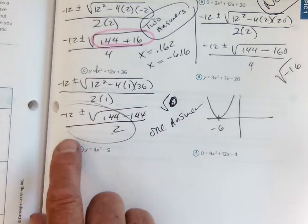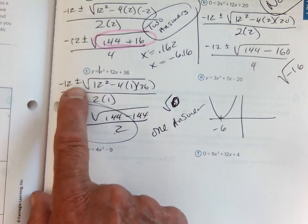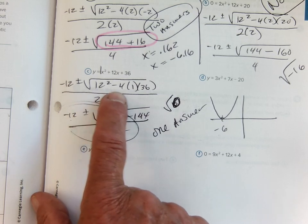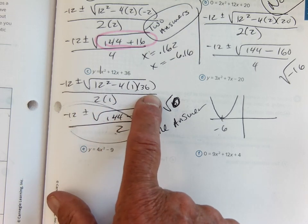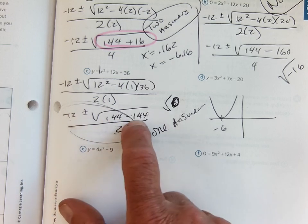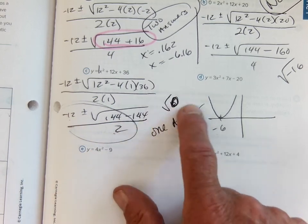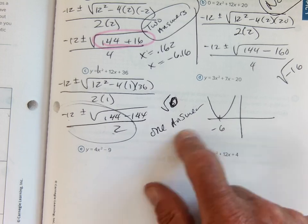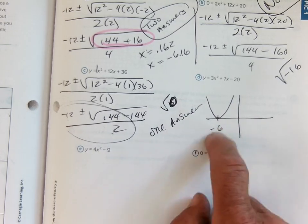Then finally, the third example: we took negative b plus minus square root of b squared minus 4 times a times c all over 2a. We evaluated that—144 minus 144, which is zero. The square root of zero is zero, so only one answer. We saw that it looks something like this.